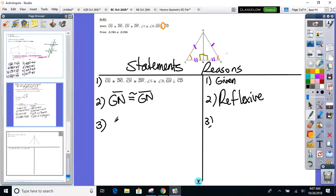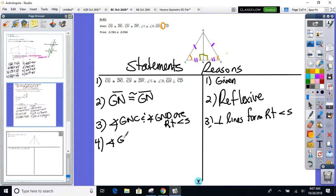So I need to know that angle GNC and angle GND are right angles first before you can say they're congruent. And what reason have we've been using to say that they're right angles? Perpendicular lines form right angles. Now you can tell me that they're congruent. But you have to tell me they're right angles first.